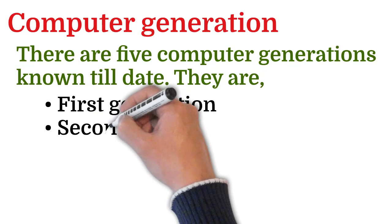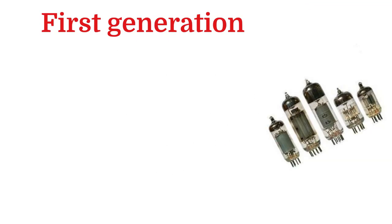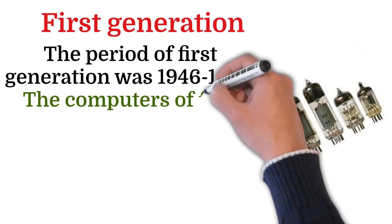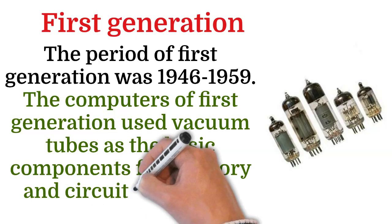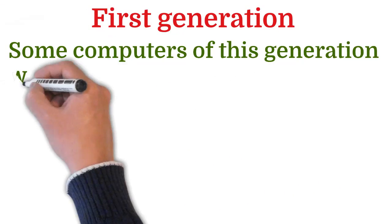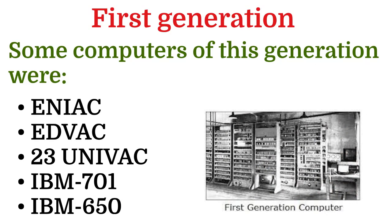The first generation computers spanned the period 1946 to 1959. They used vacuum tubes as the basic components for memory and circuitry for the CPU. Some computers of this generation were ENIAC, EDVAC, UNIVAC, IBM 701, IBM 650, etc.